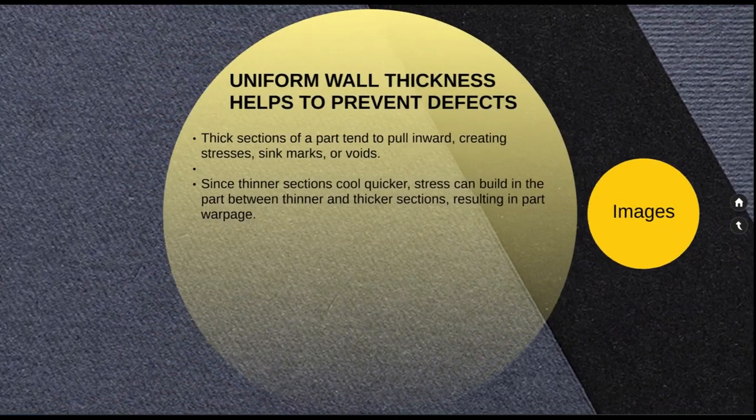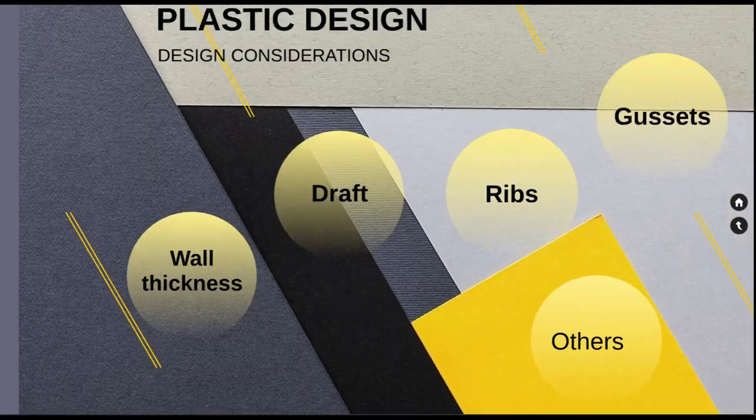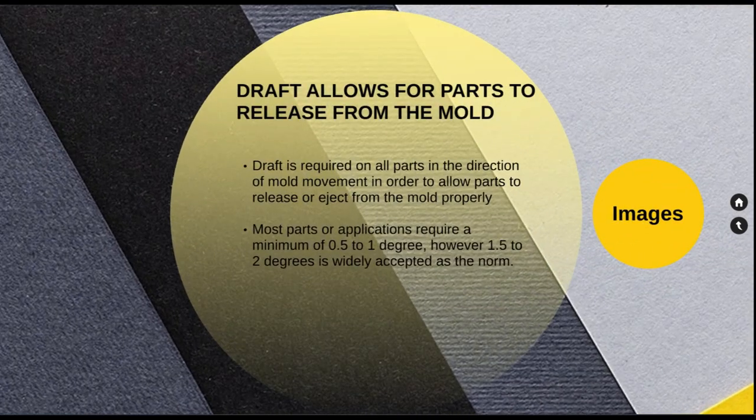The second parameter to be considered is the draft angle. Draft angle is really important because when the plastic component is ejected out of the mold, the proper amount of draft angle has to be given in order to eject the part without any damage. The draft is required on all parts in the direction of mold movement in order to allow the parts to release or eject from the mold properly. Most parts require a minimum of 0.5 to 1 degree draft angle.